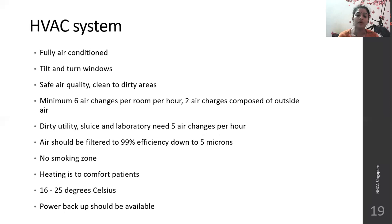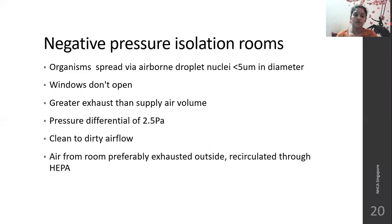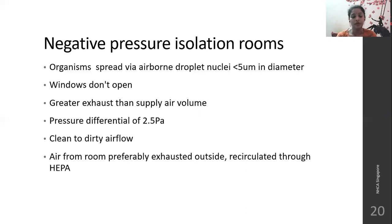In the dirty utility, sluice area, and laboratory area, 5 air changes per hour is adequate. Air filters should have 99% efficacy down to 5 microns. It should be a no smoking zone. Heating is to comfort the patient only, not to control temperature. 16 to 25 degrees Celsius is the ideal temperature for an ICU. Power backup system should be available. For negative pressure isolation rooms, organisms that spread by airborne or droplet nuclei should be placed here. Windows should not be open; the exhaust fan output is greater than the air supply, with a pressure differential of 2.5 PA. Air movement is from clean to dirty, and air can be recirculated through HEPA filtration.